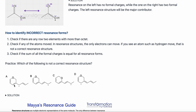And that structure is — I'll give you a second to think about it — structure C. The reason structure C is different from the rest is that in structure C, oxygen has moved. For resonance structures, the only thing I can move is electrons — I cannot move atoms. Here, oxygen and carbon have switched places, so this must be an incorrect resonance structure.